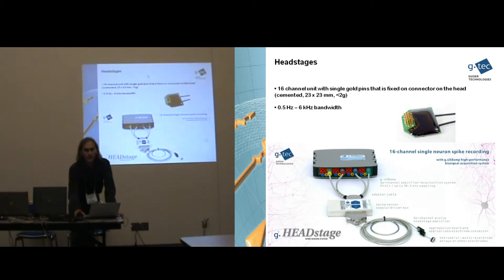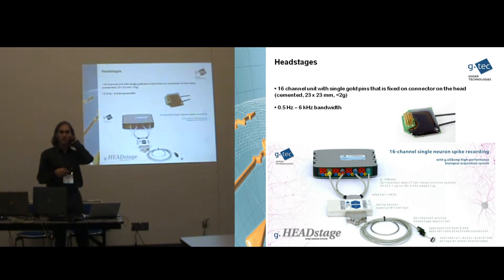Then the microdrive is connected to a head stage amplifier like shown here. So there are several operational amplifiers included. In this case it is a 16 channel unit. It has 23 mm, weight is less than 2 grams. So it is important that the weight is not too high otherwise the rat has problems moving around. And then you can connect it to the cable and to the main amplification unit.